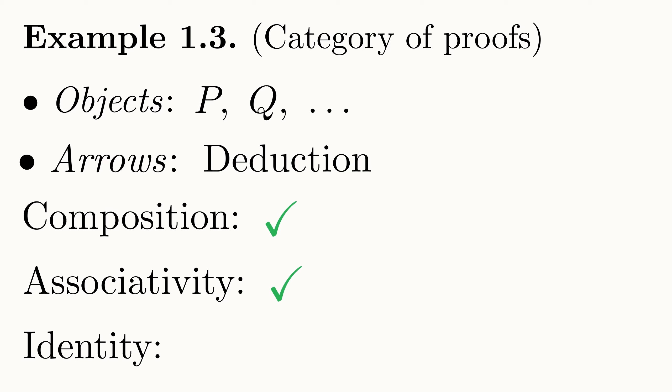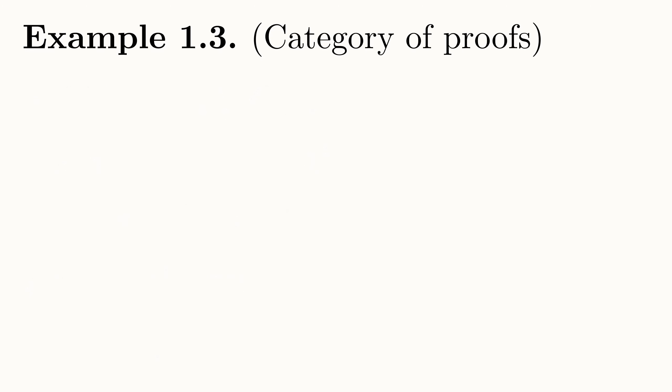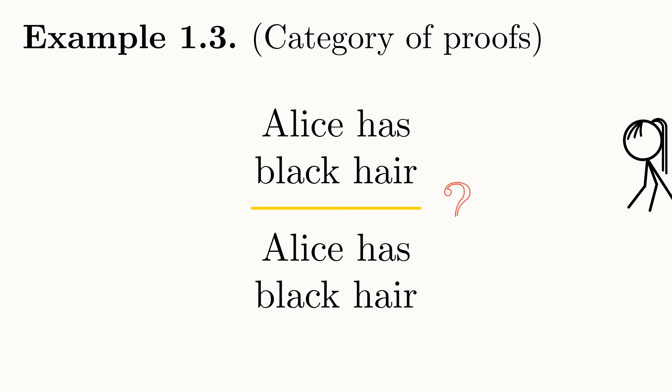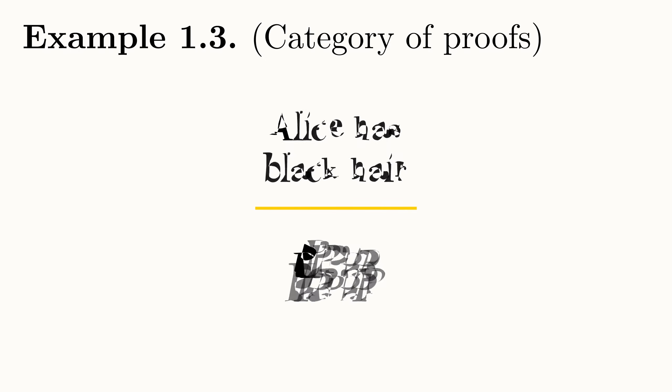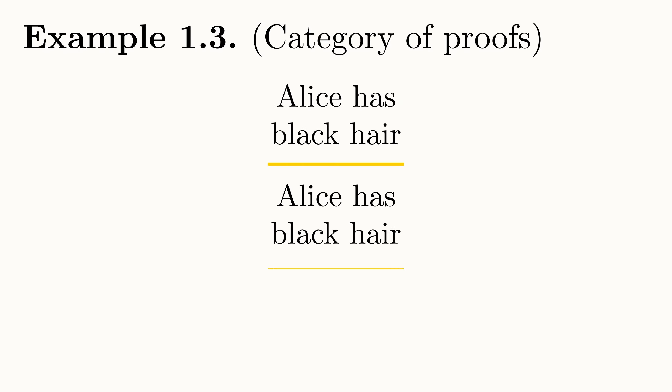All that's left now is to show that some sort of identity proof exists for every proposition. This is actually easier than it sounds. Let's take the arbitrary proposition Alice has black hair. An identity deduction for this object must have the form given that Alice has black hair, then Alice has black hair. Does such a deduction exist? Well, yes. Given that any proposition P is true, then of course it follows that P is true. This also clearly acts as a unit of deduction. I implore you to have a think about why if you don't feel comfortable with believing me. Just consider the identity deduction before and after any other composable deduction.